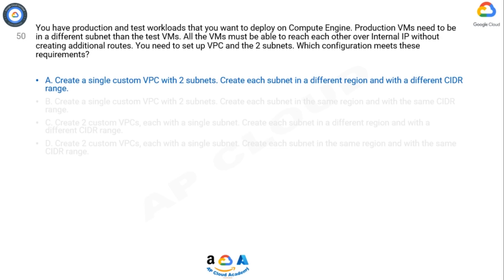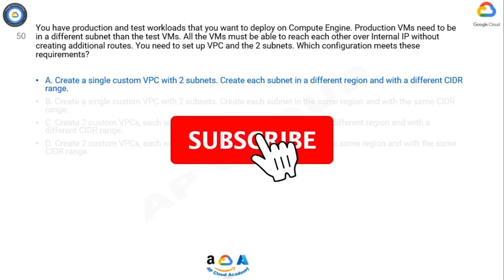If we have two subnets, they cannot use the same CIDR. For IPv4 subnet ranges, each primary or secondary IPv4 range for all subnets in a VPC network must be a unique valid CIDR block. Refer to the per-network limits for the number of secondary IP ranges you can define.